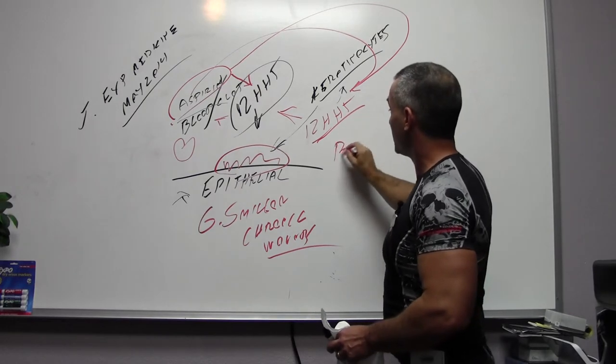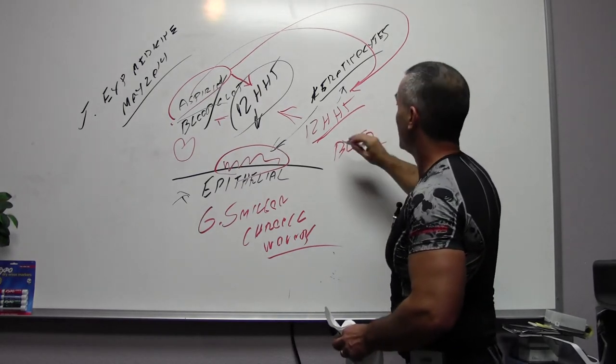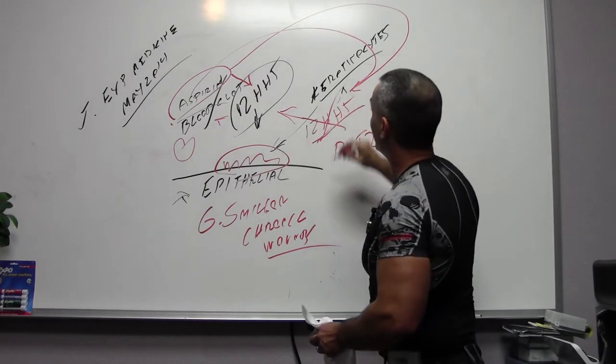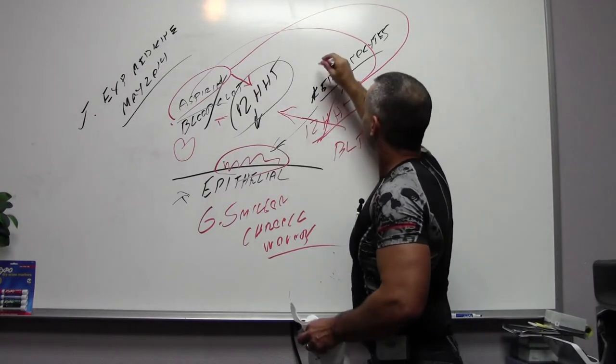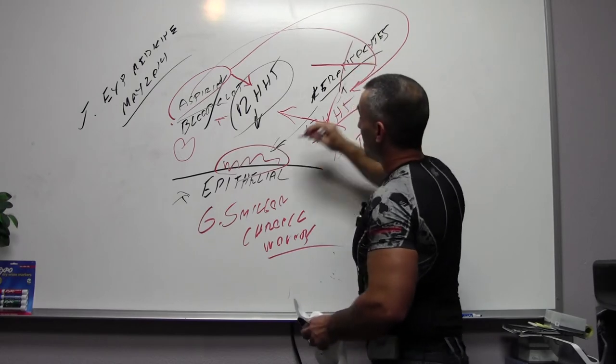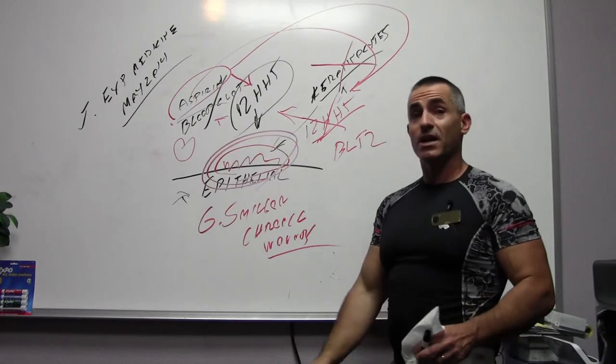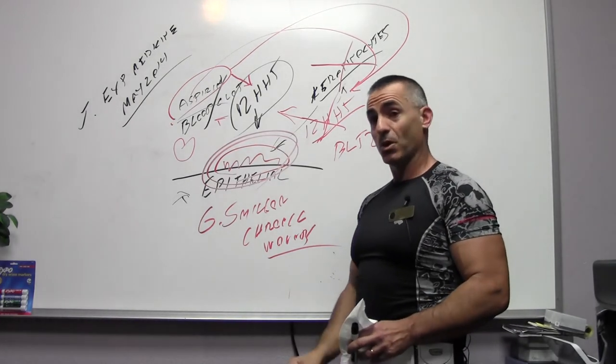which actually works with an enzyme called BLT2. But it prevents this HHT from being produced, meaning the skin never calls in the keratinocytes to help heal the epithelial cell, meaning this wound becomes chronic and never goes away.